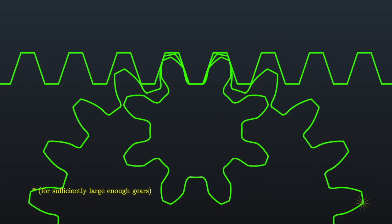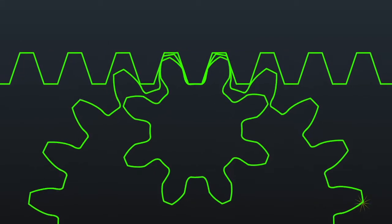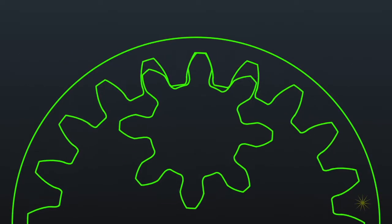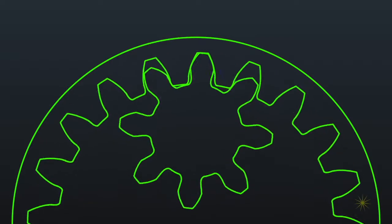This implies that for a sufficiently large enough outer gear, we can use the same tooth geometry to describe an internal involute gear, the outer ring gear for a planetary gear system.